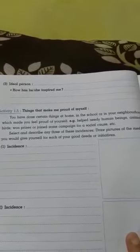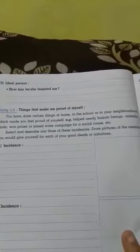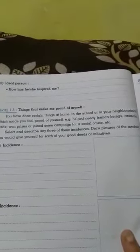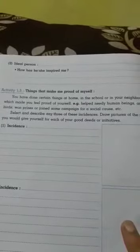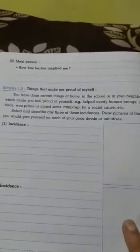Select and describe any three of these incidents. Draw a picture of the medals you would give yourself for each of your good deeds or initiatives. Suppose you have done something good in the society, in the school, or somewhere else and you have got any medal for it.